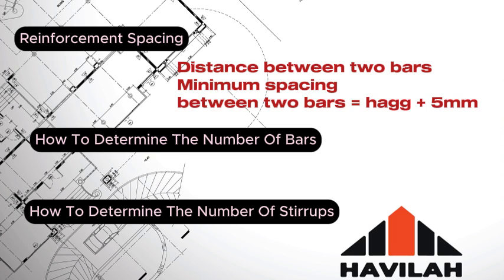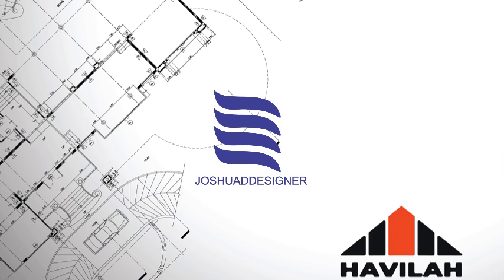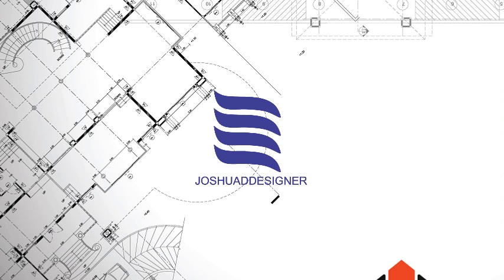The number of stirrups is obtained by dividing the actual length by the spacing, plus one. Thank you for staying around. I am Joshua, the designer. If you're new to my channel, do well to subscribe, like this video, and share with your friends and colleagues. See you in the next video.